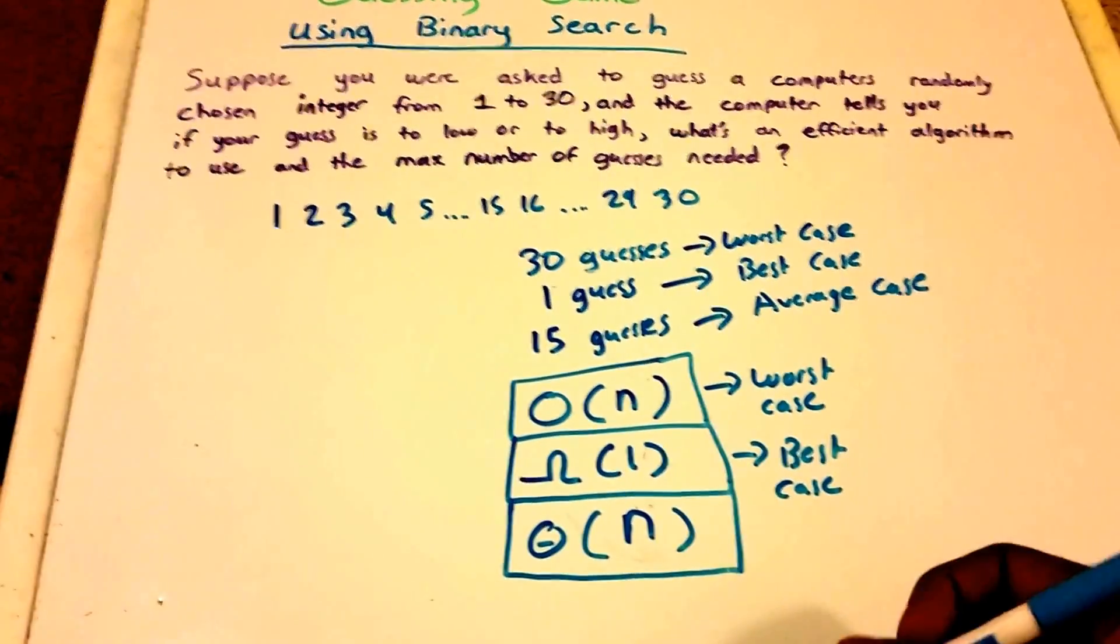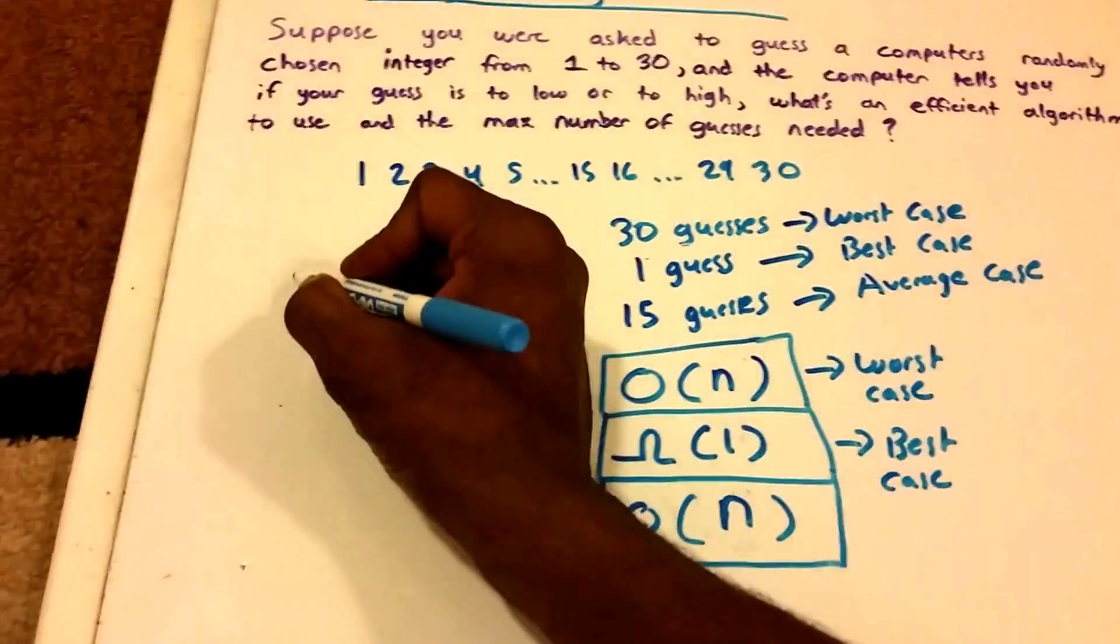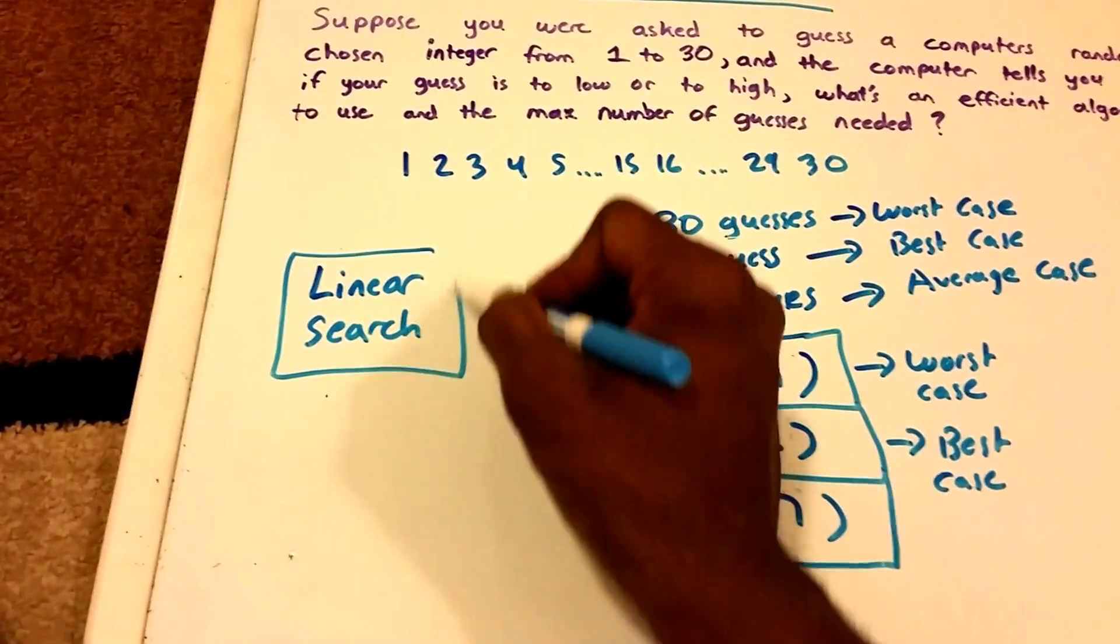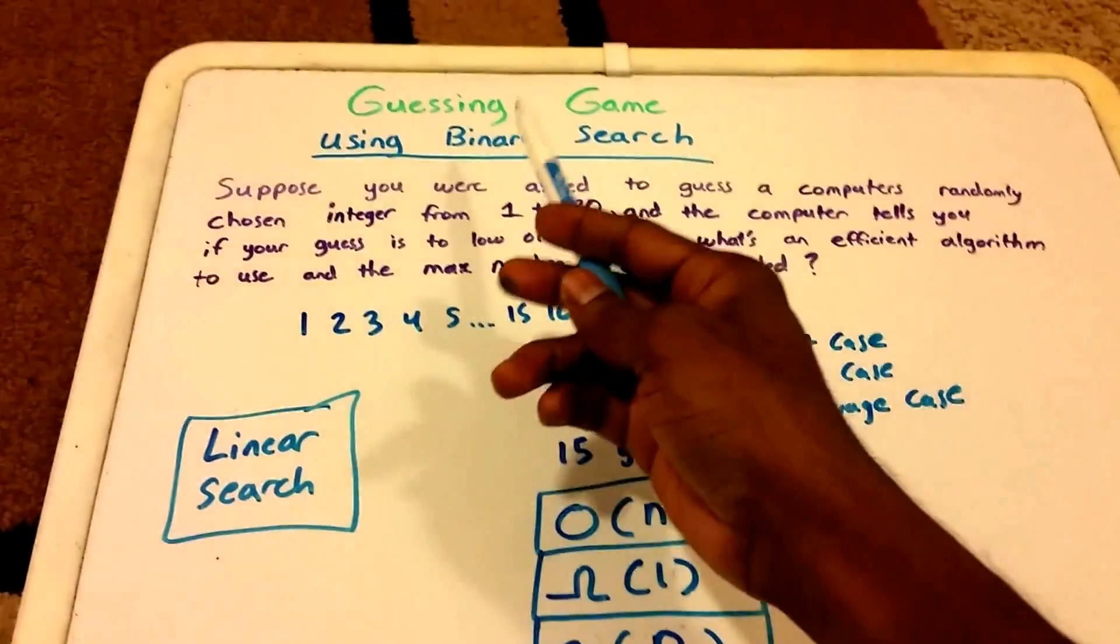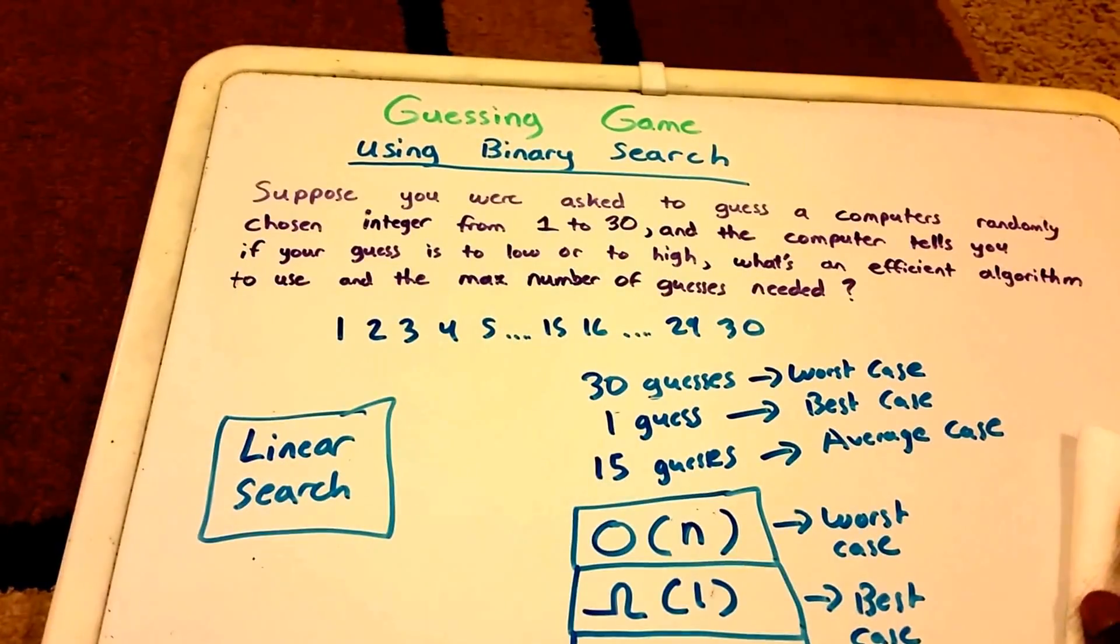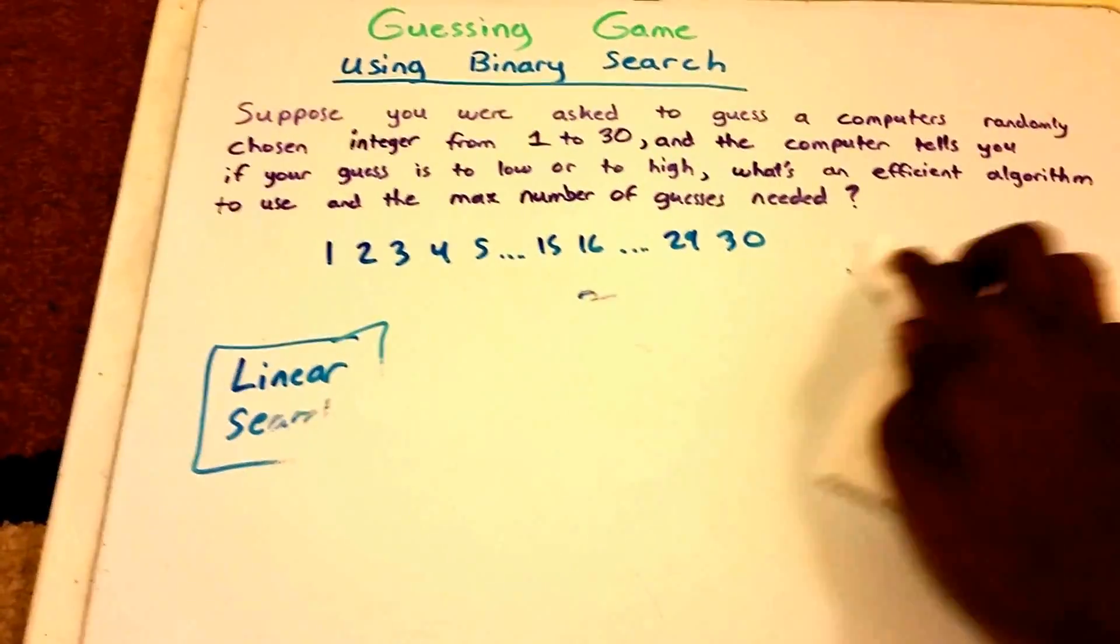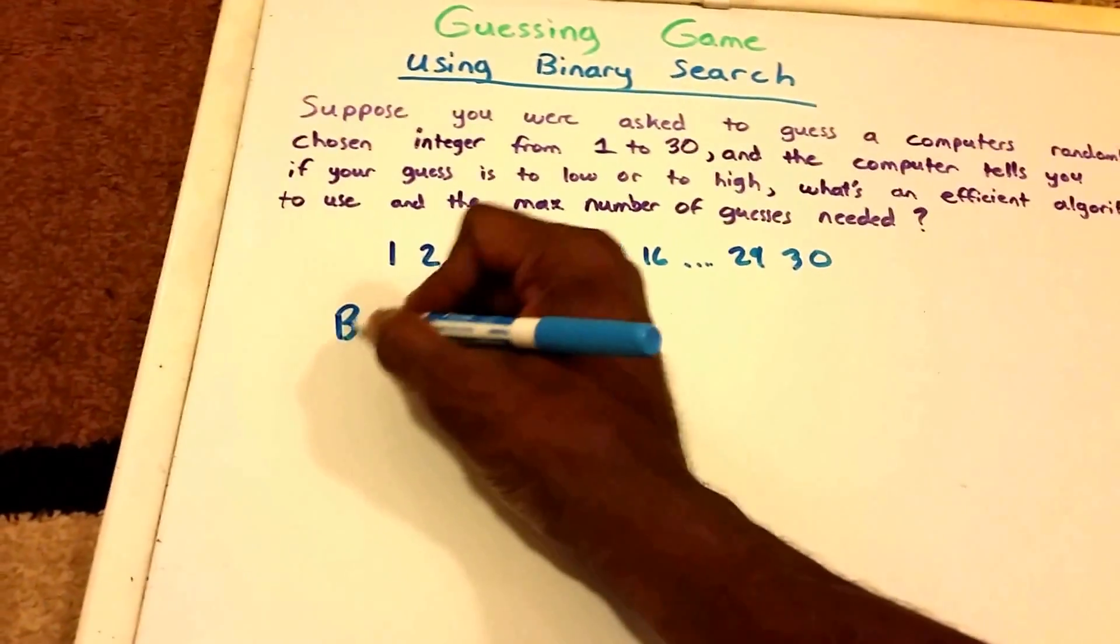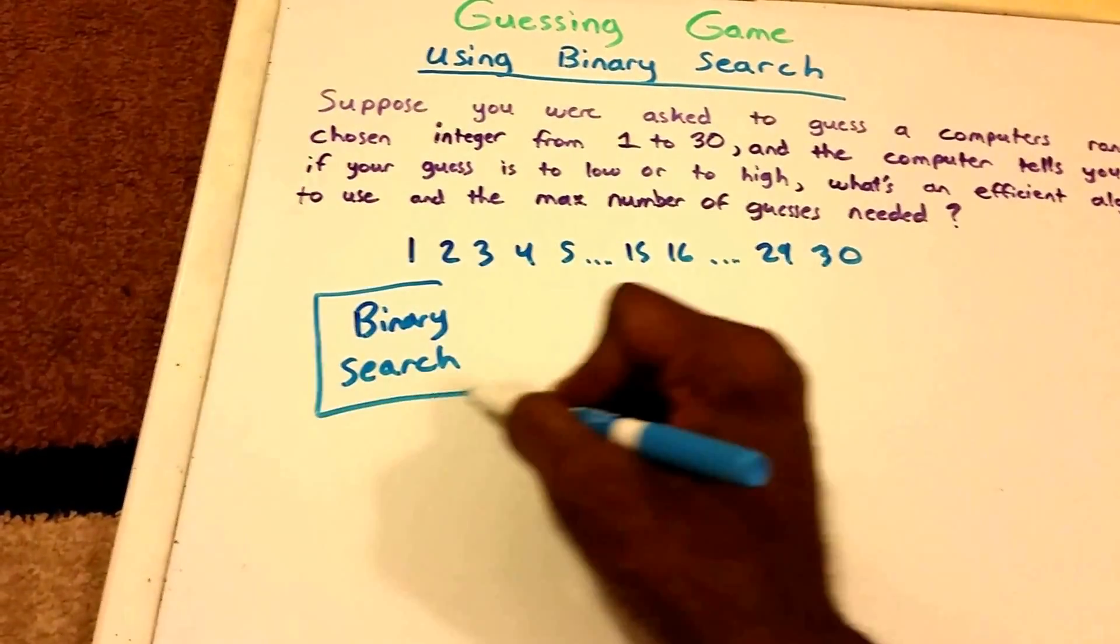But of course, there's a more efficient algorithm to use than this algorithm. And I didn't tell you what this algorithm is called. The algorithm that we use is called linear search. And again, there's a better algorithm to use. Hit the name here, binary search. So that's exactly what we're going to use next to come up with a more efficient way to make these guesses. So I'm going to erase the board here. And let's use the algorithm called binary search.